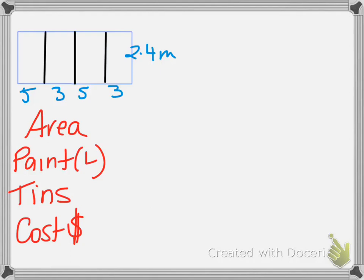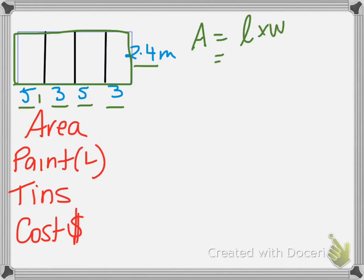Alright, first step. We need to look at the area that is being painted. Now we can treat this as one giant wall if we add these ones up and multiply it by the height. So we've got length times width. It's a rectangle. We've got a length. If we add these all up, we get a length of 16. And our height is 2.4. And that gives us 38 square metres that we are going to need to cover. So we've found the area easy.